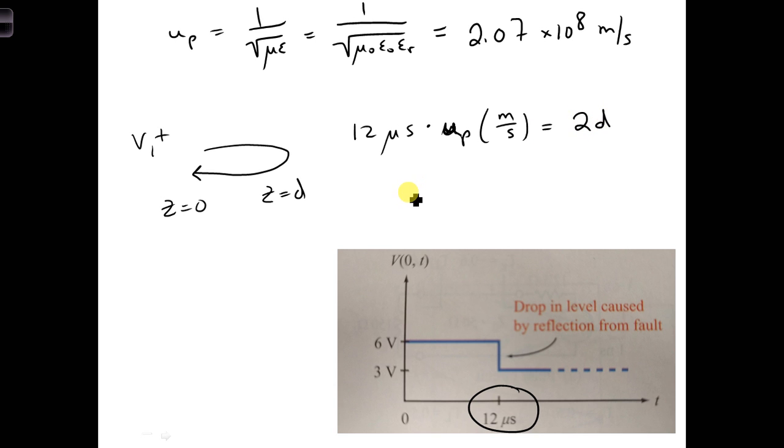We can solve then, because we know U P, we can solve then for D. D is 1.24 kilometers.